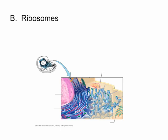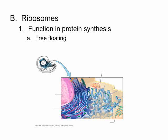Ribosomes would be the next organelle we'll look at. Their function is protein synthesis. The ribosomes can be either free floating, meaning they are not attached to anything and just floating around inside the cytoplasm, or they can be bound to an organelle called the endoplasmic reticulum. You can see the purple nucleus in the picture, with a network of blue membranes — that's the endoplasmic reticulum — and all along it you can see little red dots, which are the ribosomes.